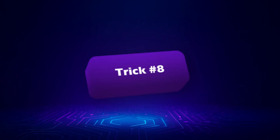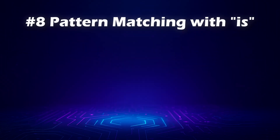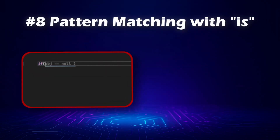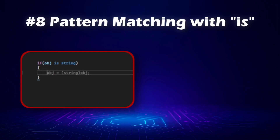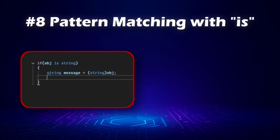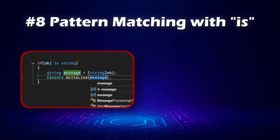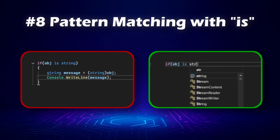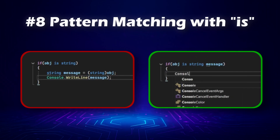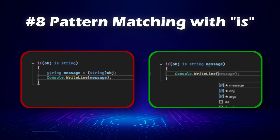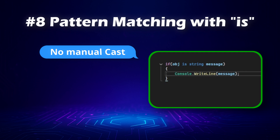This brings us to trick number 8: pattern matching with `is`. Here's how you often see it written in older code. Now let's look at a modern way with pattern matching. This is a super clean way to work with types in modern C#. First, you don't need to cast manually — the compiler handles it for you.